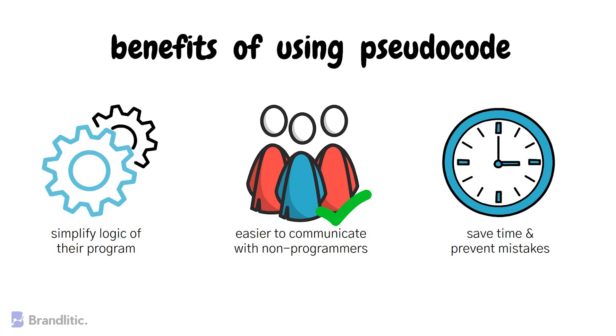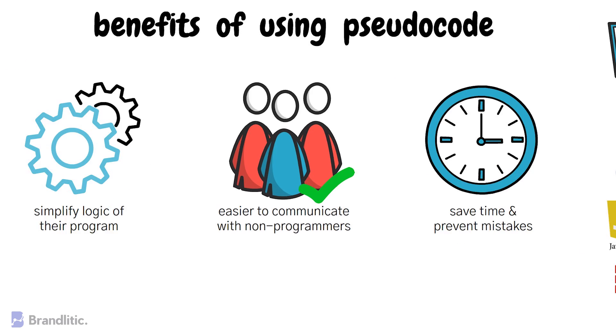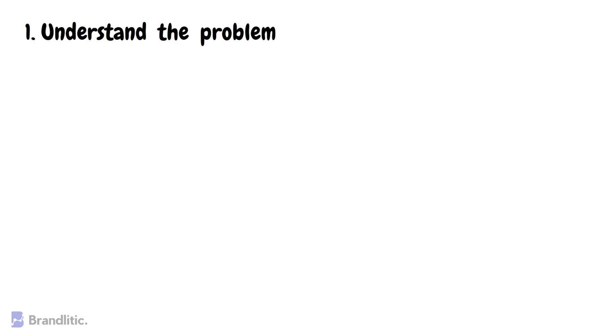So now that you know what pseudocode is and why it's important, how do we write it? Well, the answer is to follow these steps. Step one, understand the problem you're trying to solve. Before you start writing pseudocode, you need to know exactly what problem you're trying to solve or what task you're trying to complete.